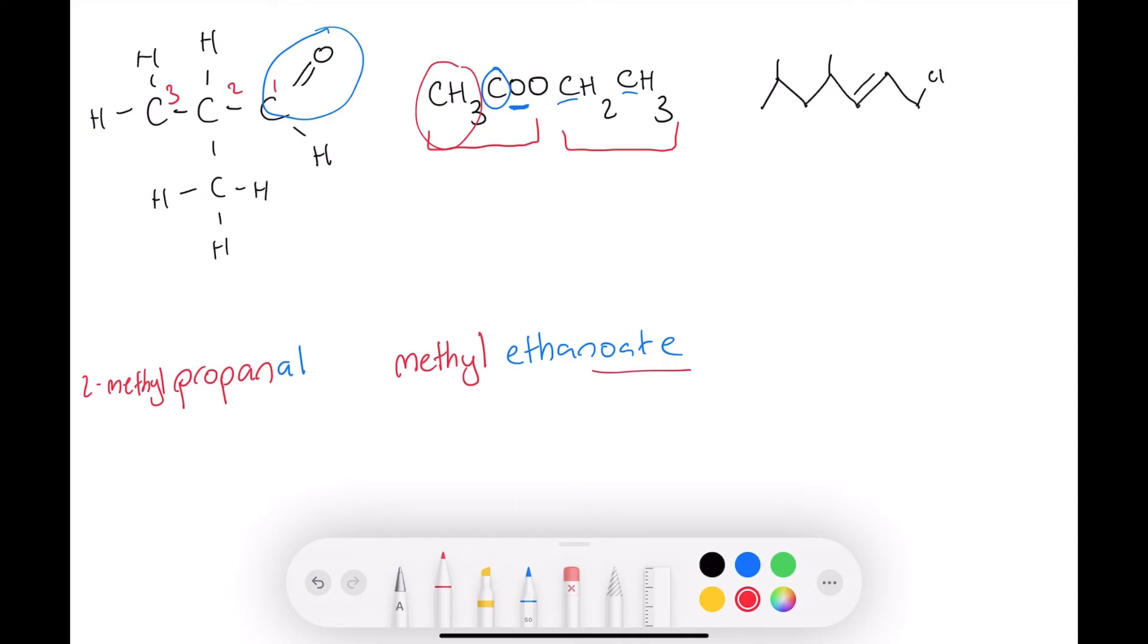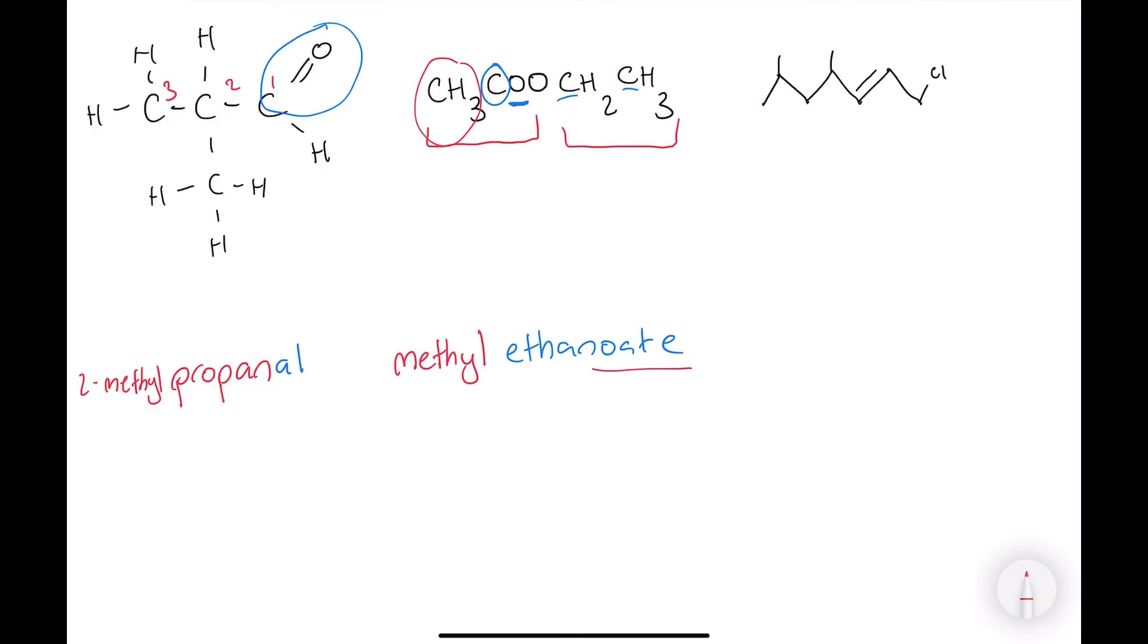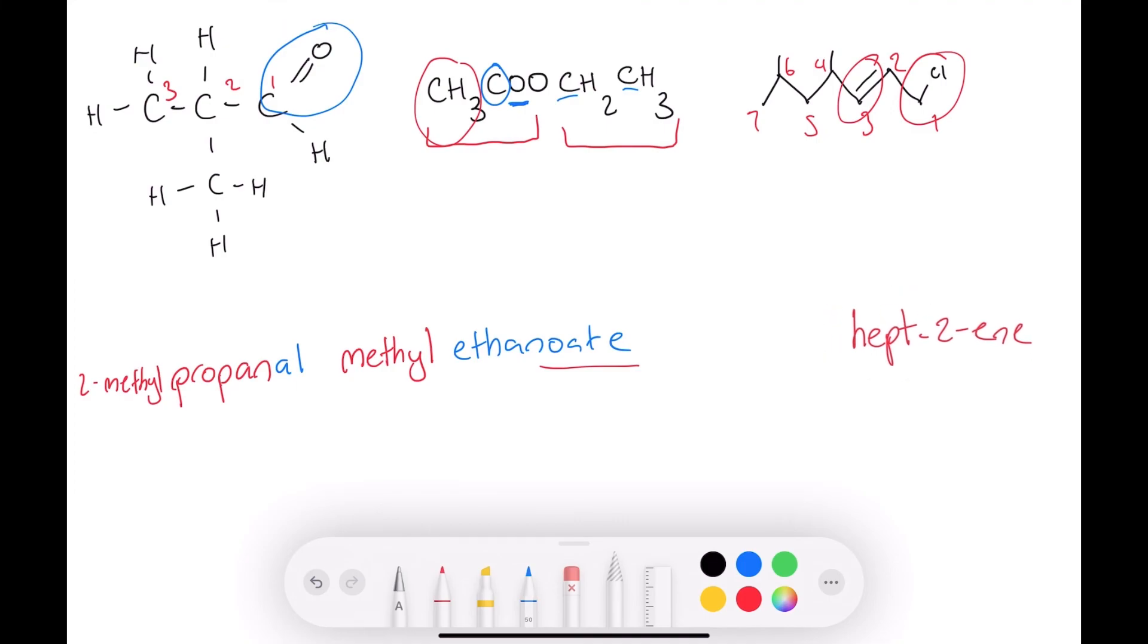For this one, you can see we have both a halogen and a double bond, so we have a haloalkene. You can number this: one, two, three, four, five, six, seven. We have a hept, and then we have a double bond at the end - hept-2-ene. We're not going to make it hept-6-ene, and we have one chloro. We also have to mention the chloro and the methyl groups.